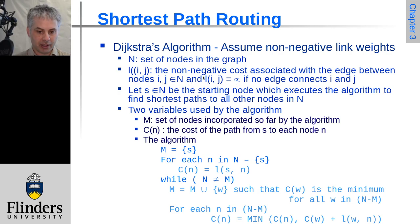And those where there's no direct connection, that cost will be infinity. So this is a little bit similar to what we saw with the distance vector routing. If there's no direct edge, the cost is infinity.